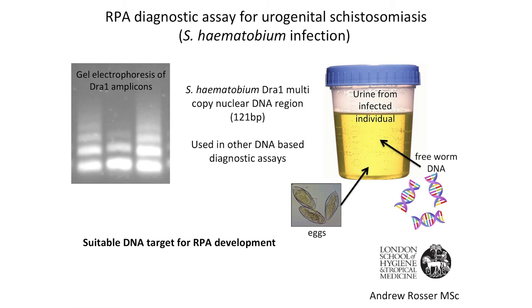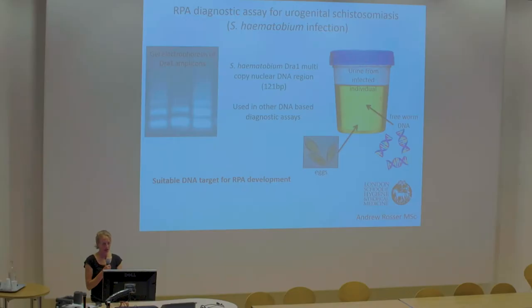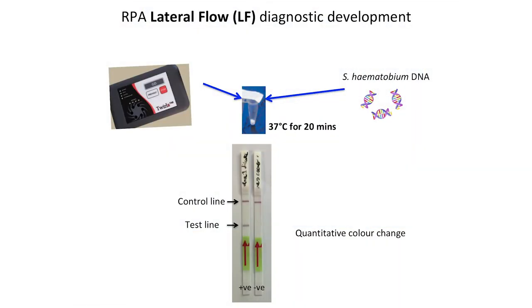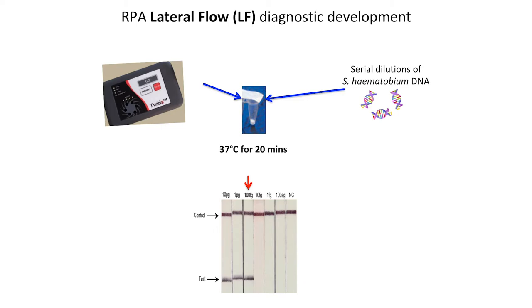We developed an RPA assay for S. haematobium, which causes urogenital schistosomiasis, targeting eggs in urine samples or free DNA. We based our assay on a highly repetitive element in the haematobium genome known as the DraI repeat. We tested this using the lateral flow system and got very good results, amplifying within 20 minutes, producing a positive result for haematobium DNA. We achieved a sensitivity of 100 femtograms of DNA — not as low as I'd like for the lateral flow system, but with more optimization we can improve that.